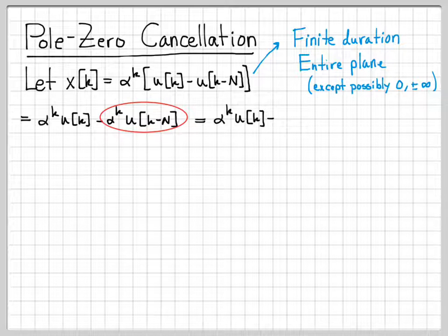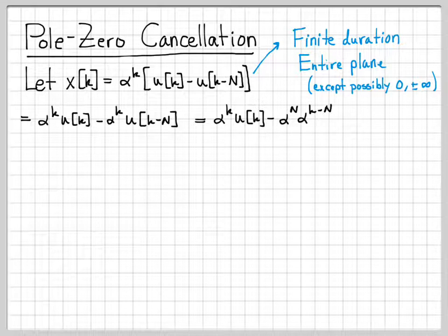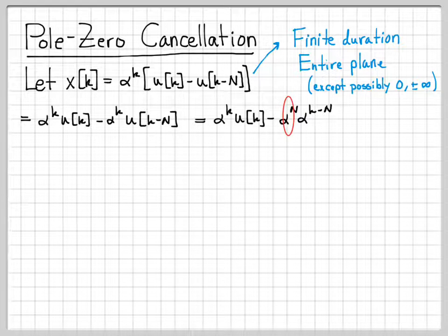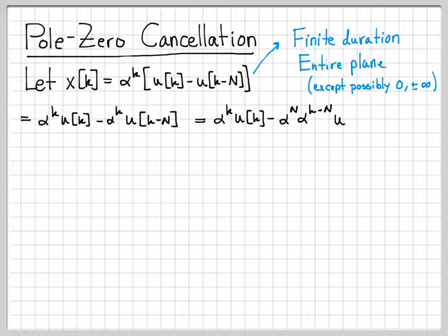It sure would be nice if both of those were k minus N, because then I could use my timeshift theorem. Well, I can get this to turn into alpha to the k minus N if I just multiply by alpha to the N and then change it to alpha to the k minus N. If you add both these exponents, you're back exactly where you started. So I haven't changed anything. That product is still alpha to the k, but now it's written in a way that will let me use the timeshift theorem because alpha to the capital N is just a number, just a scalar. So now I have u[k-N].